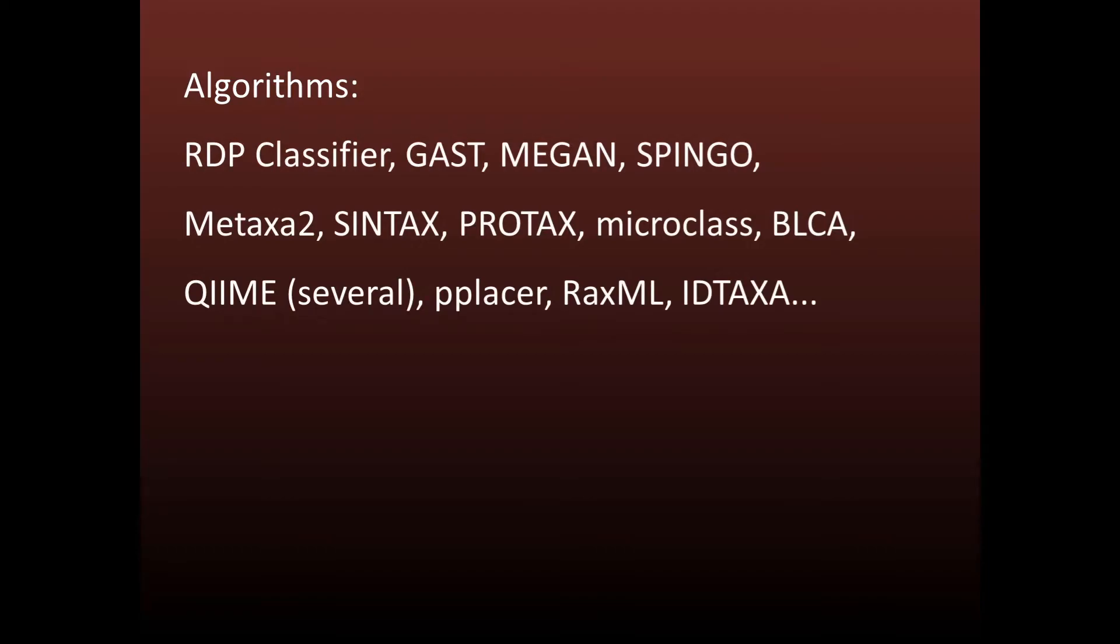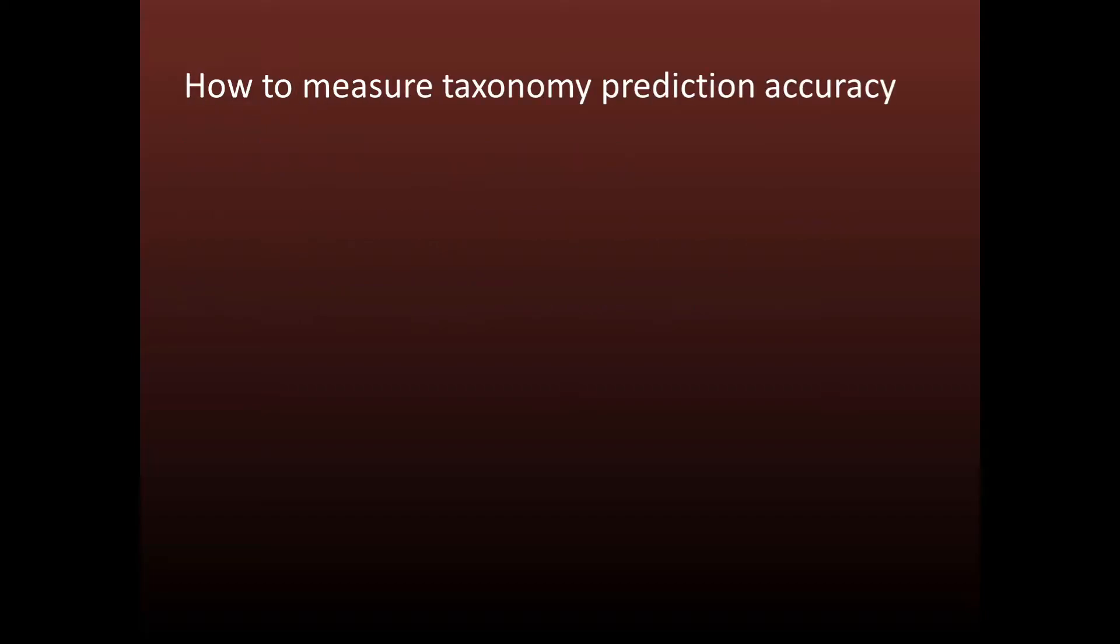Many different taxonomy prediction algorithms have been published. How should you choose which one to use? I think most people would agree that the most important consideration is biological accuracy. So let's consider how to measure taxonomy prediction accuracy.